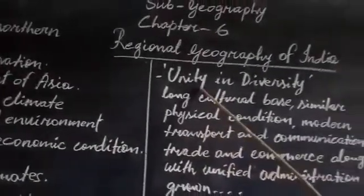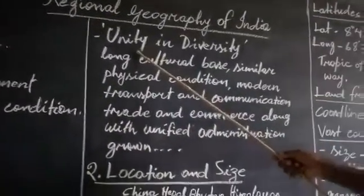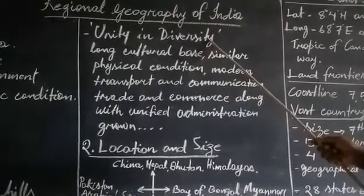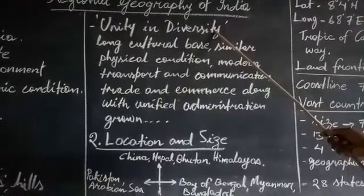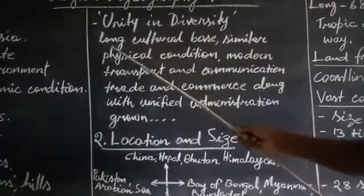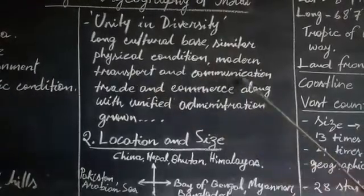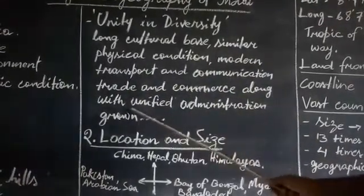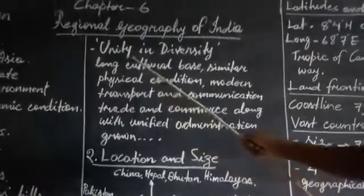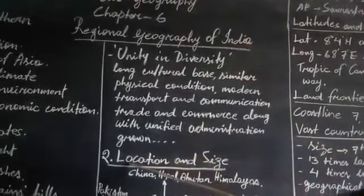India is diversified in so many things, but still India is unity in diversity. India is united although it is divided by its climate, physical environment, and socio-economic condition, because it has a long cultural base, similar physical conditions, modern transport and communication, trade and commerce, and a unified administration that has grown in recent years. That is why we say India is unity in diversity.